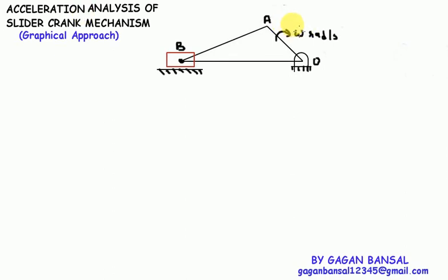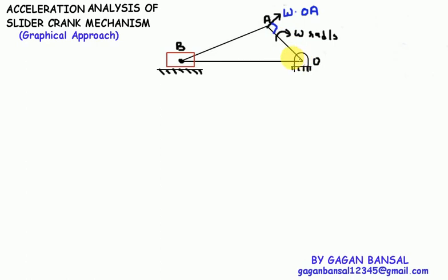To start with the velocity analysis, O is the fixed point. The velocity of point A with respect to O, or the absolute velocity of A on link OA, will be perpendicular to the link, and its magnitude will be omega times distance OA. The velocity of any point on the link is perpendicular to the link and its magnitude is omega times the distance of the point from the fixed point.